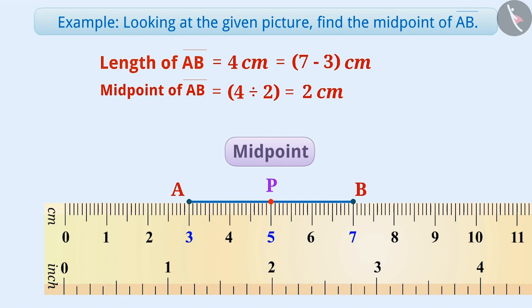To identify the midpoint, we can also move 2 cm towards the left of B. On doing so, we will reach the same point. In this way, we have obtained midpoint P of AB.